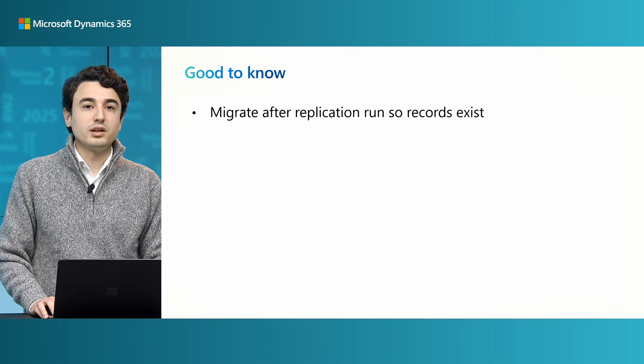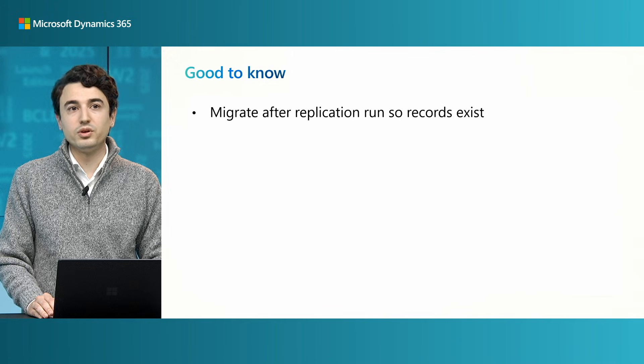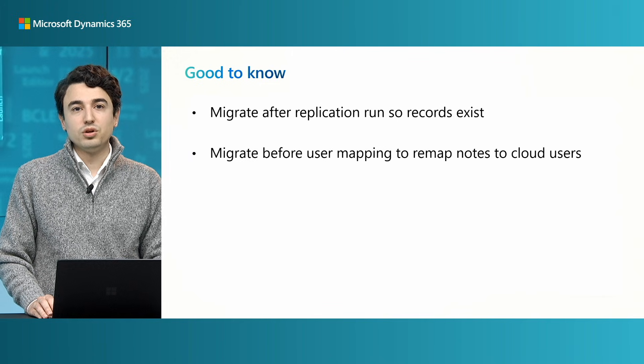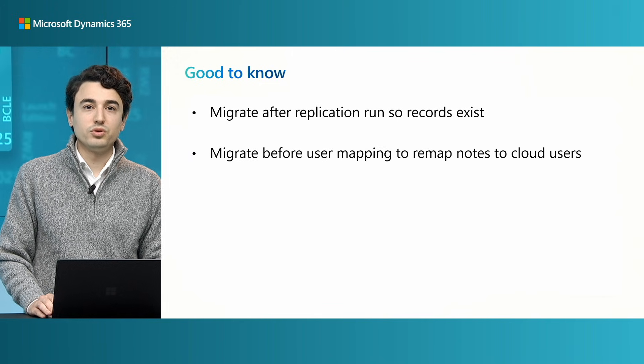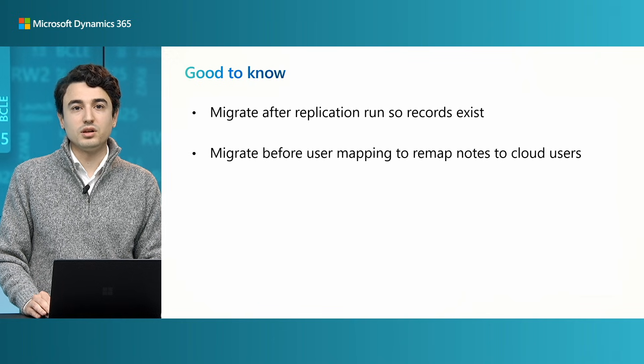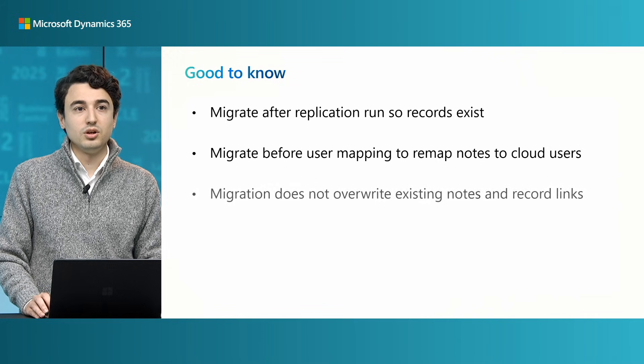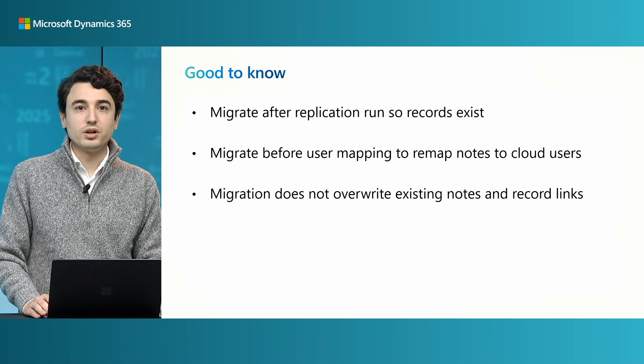So that's it — that's how easy it is. Just a couple of notes I'd like to run by before I say goodbye. Make sure you run the record links and nodes migration after the replication so that records are moved to the buffer table beforehand. Also, make sure you do this before doing the user mapping, because when you do the user mapping, we'll change the users on the record links and nodes to the ones that you mapped to. And just so you know, we do not override your existing record links and nodes, so it's very safe to use. You can run the action multiple times.